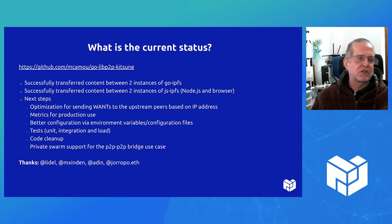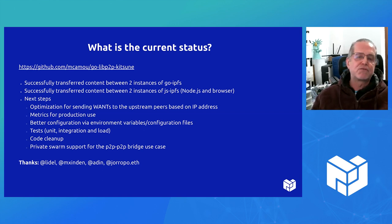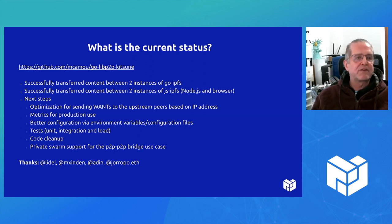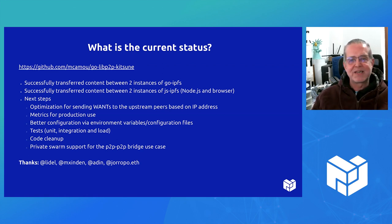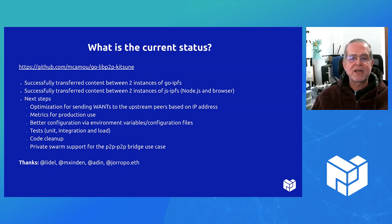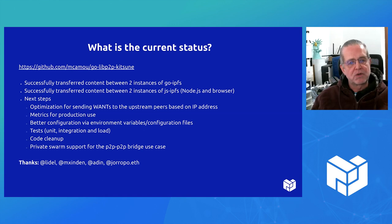A few next steps: the optimization I mentioned about routing based on the IP address the REST call came from; adding metrics for production use; adding configuration beyond just command-line flags — a file or environment variables would be more convenient; more tests; load testing, since I have no idea how this will behave under load; some cleanup of the code; and the private swarm feature is not yet implemented because we don't have swarm key support.